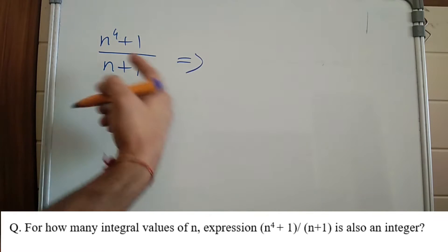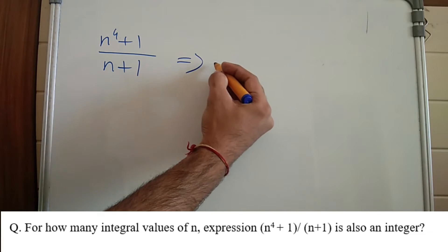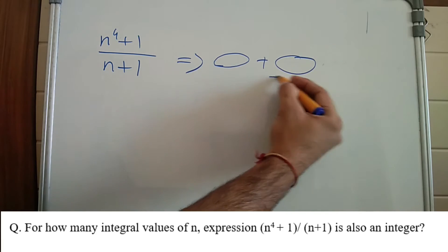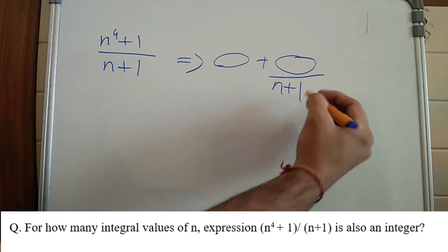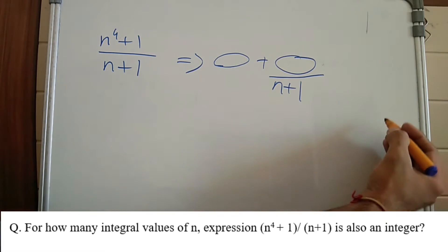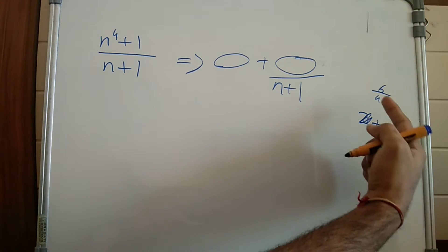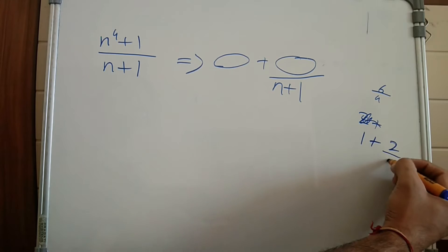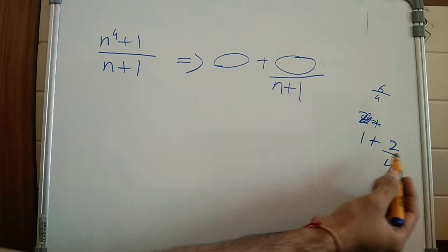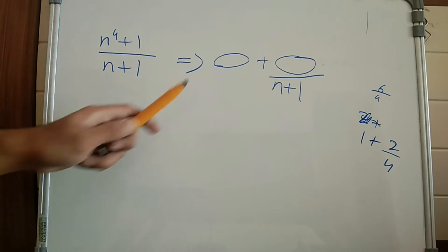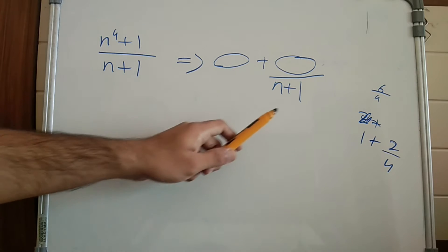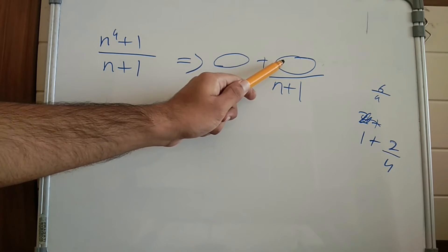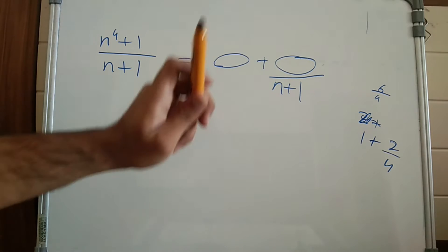If I divide it by n plus 1, I will get some quotient plus some remainder divided by n plus 1. For example, if I have to divide 6 by 4, I get 1 plus 2 by 4 — so this is the quotient and this is the remainder. The quotient part is already an integer, so I have to make the remainder part an integer. My first task is to find the remainder.